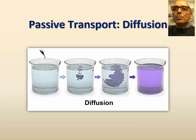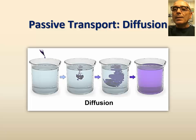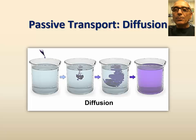Passive transport occurs through the process of diffusion, which is driven by the kinetic energy of molecules and ions. This is best illustrated by an experiment where a drop of ink is added to water, and with time the ink particles diffuse throughout the volume of water in the beaker.